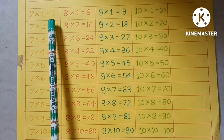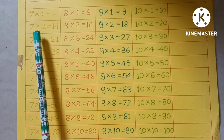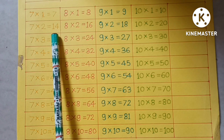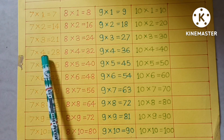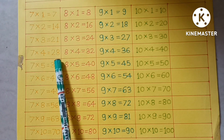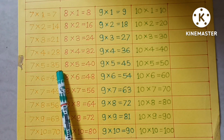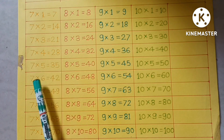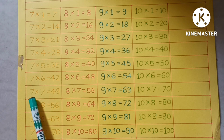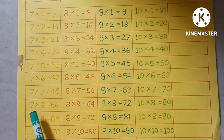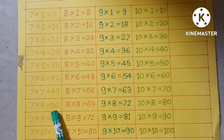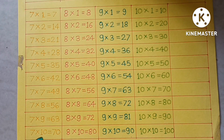7×1=7, 7×2=14, 7×3=21, 7×4=28, 7×5=35, 7×6=42, 7×7=49, 7×8=56, 7×9=63, 7×10=70.